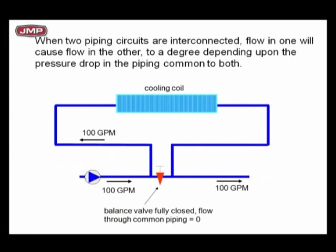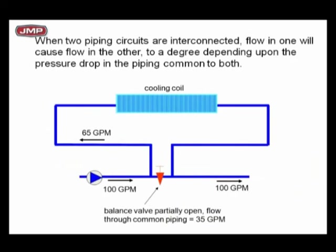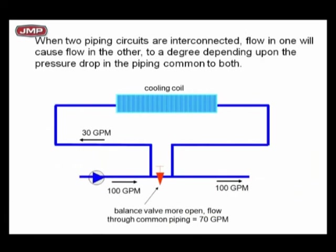Now what happens as we open up that balancing valve? We start opening the valve up and allow 35 GPM to go through the circuit setter in that common pipe between the two T's. Remember the good Lord's T-laws — what goes in that first T has to come out, what goes in the second T has to come out. I now have a partially open bypass with only a pump in my primary and 35 GPM flowing through the common pipe. If you look at the first T, I've got 100 GPM in, 35 GPM going through the T, leaving 65 GPM going through the cooling coil.